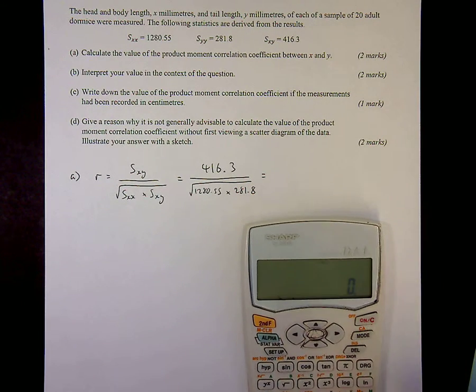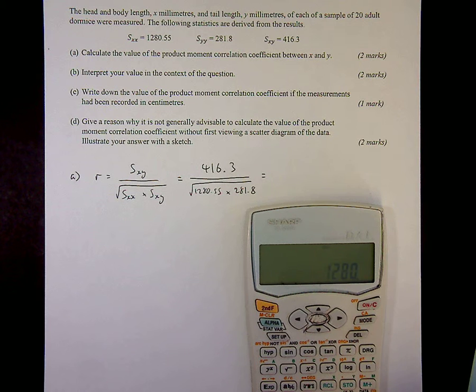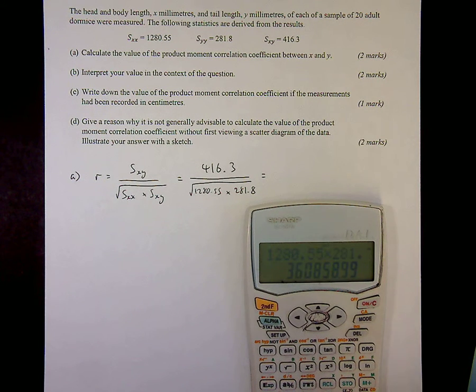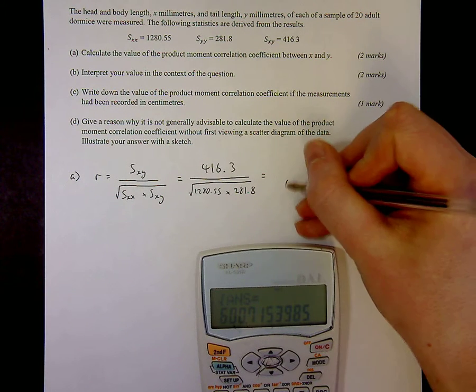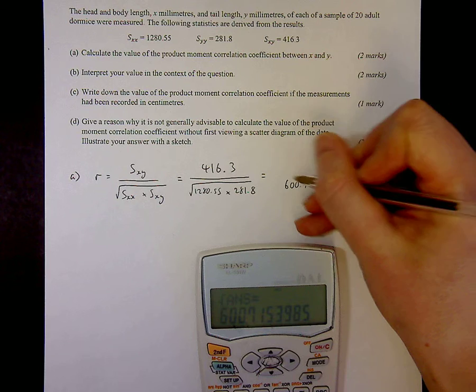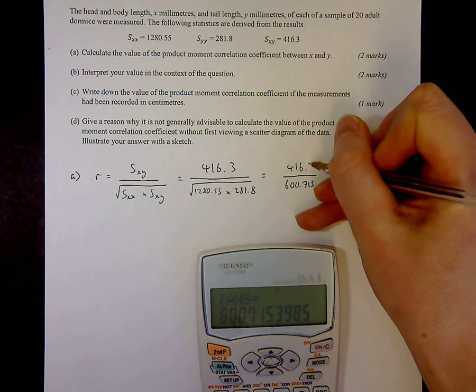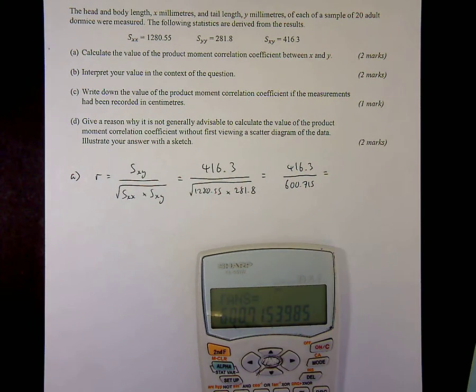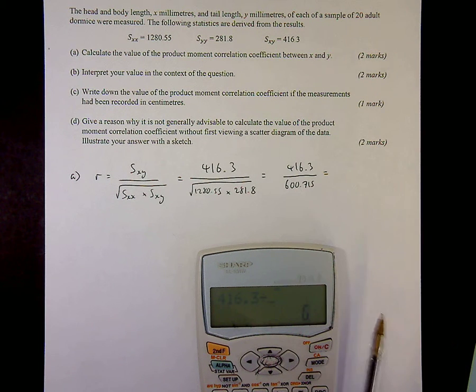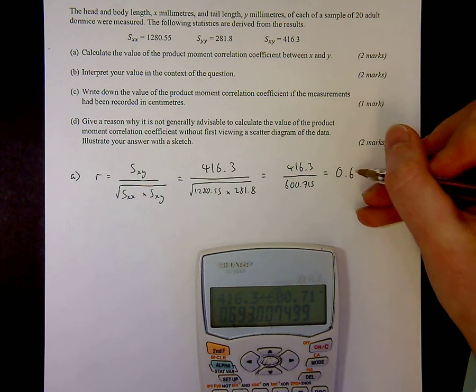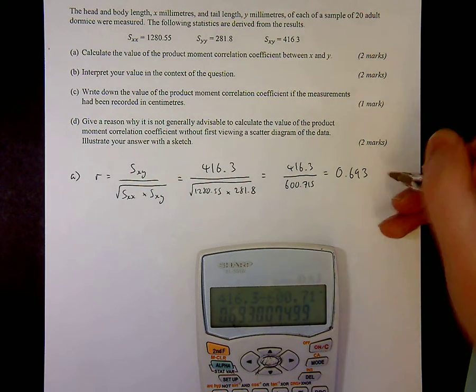Do the denominator first on the calculator of 1280.55 times 281.8. Square root of the answer means 600.715. So you cannot do this in just one step on your calculator but we are looking at these brackets. So, making sure we get it right. Divide through and I get 0.693 to 3 significant figures.